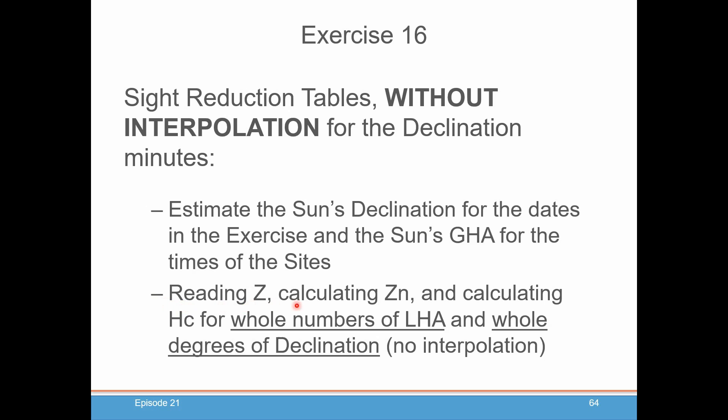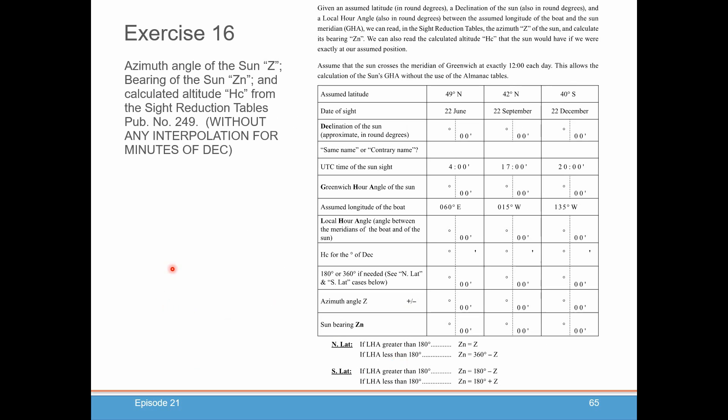What you're going to do when you go into the exercise book is look up the sight reduction table with that information in the appendix of the exercise book. You're going to pull out the Z, calculate the Zn, calculate the HC for the whole numbers of LHA and whole degrees of declination. No interpolation for minutes.